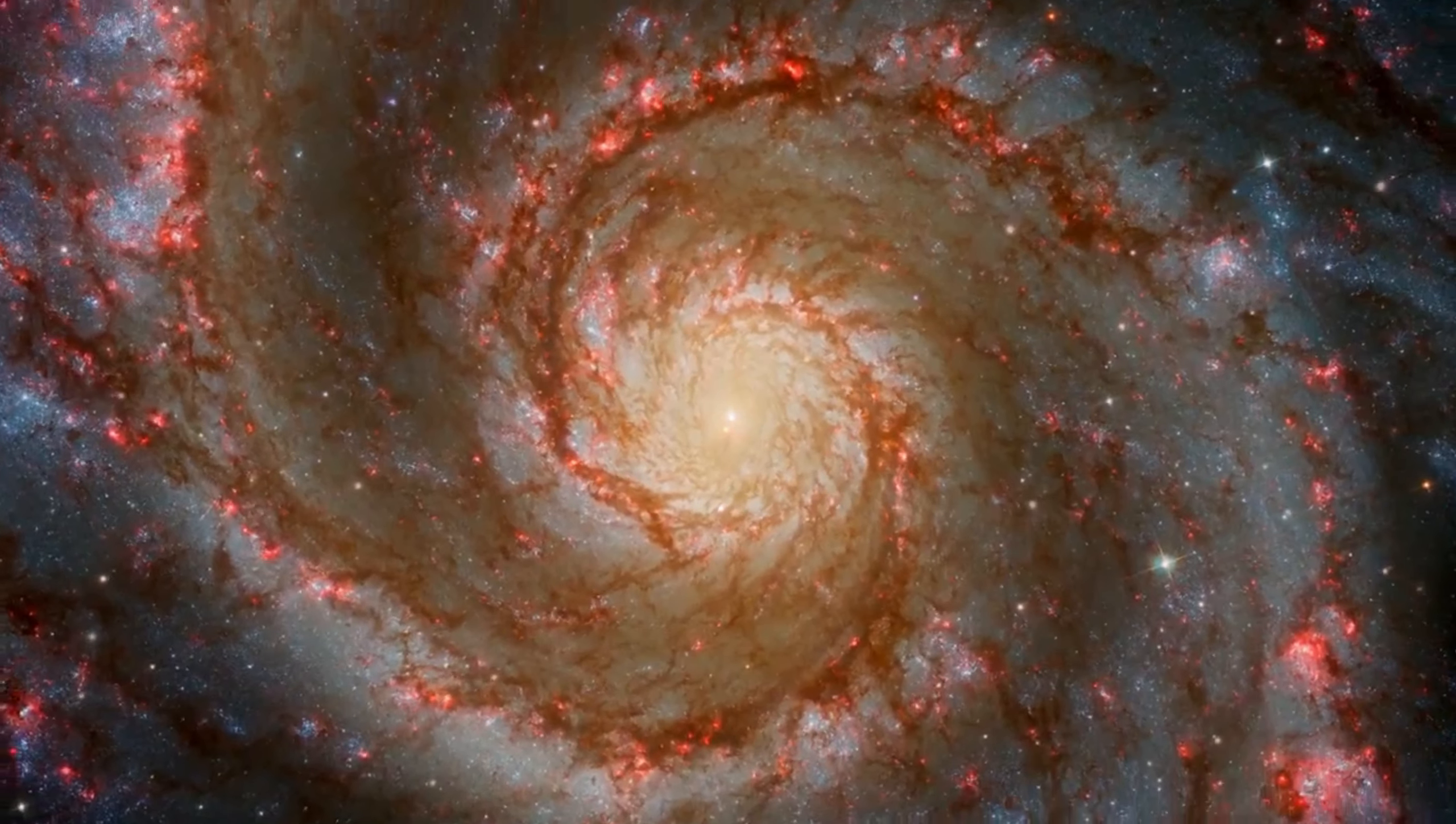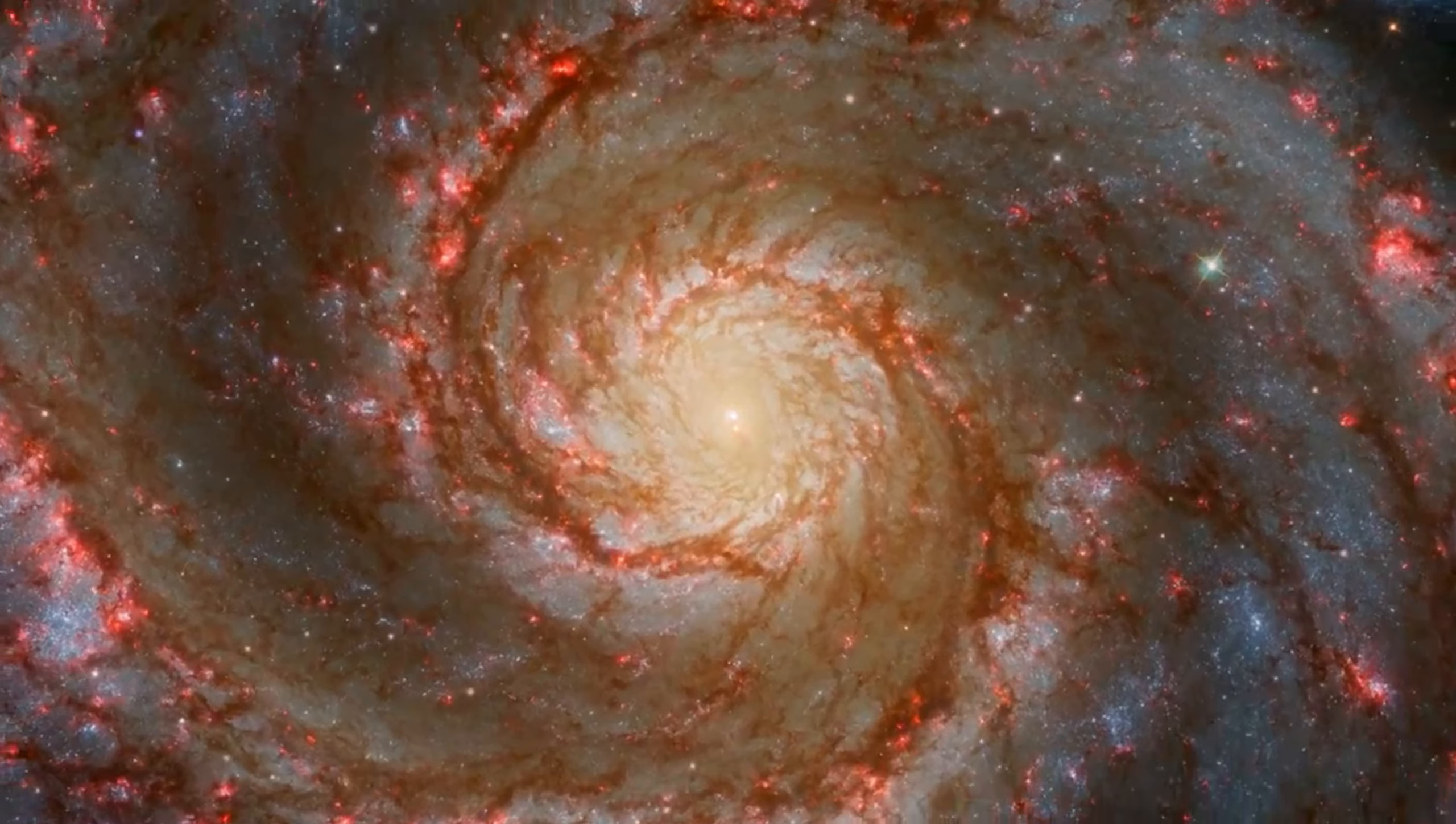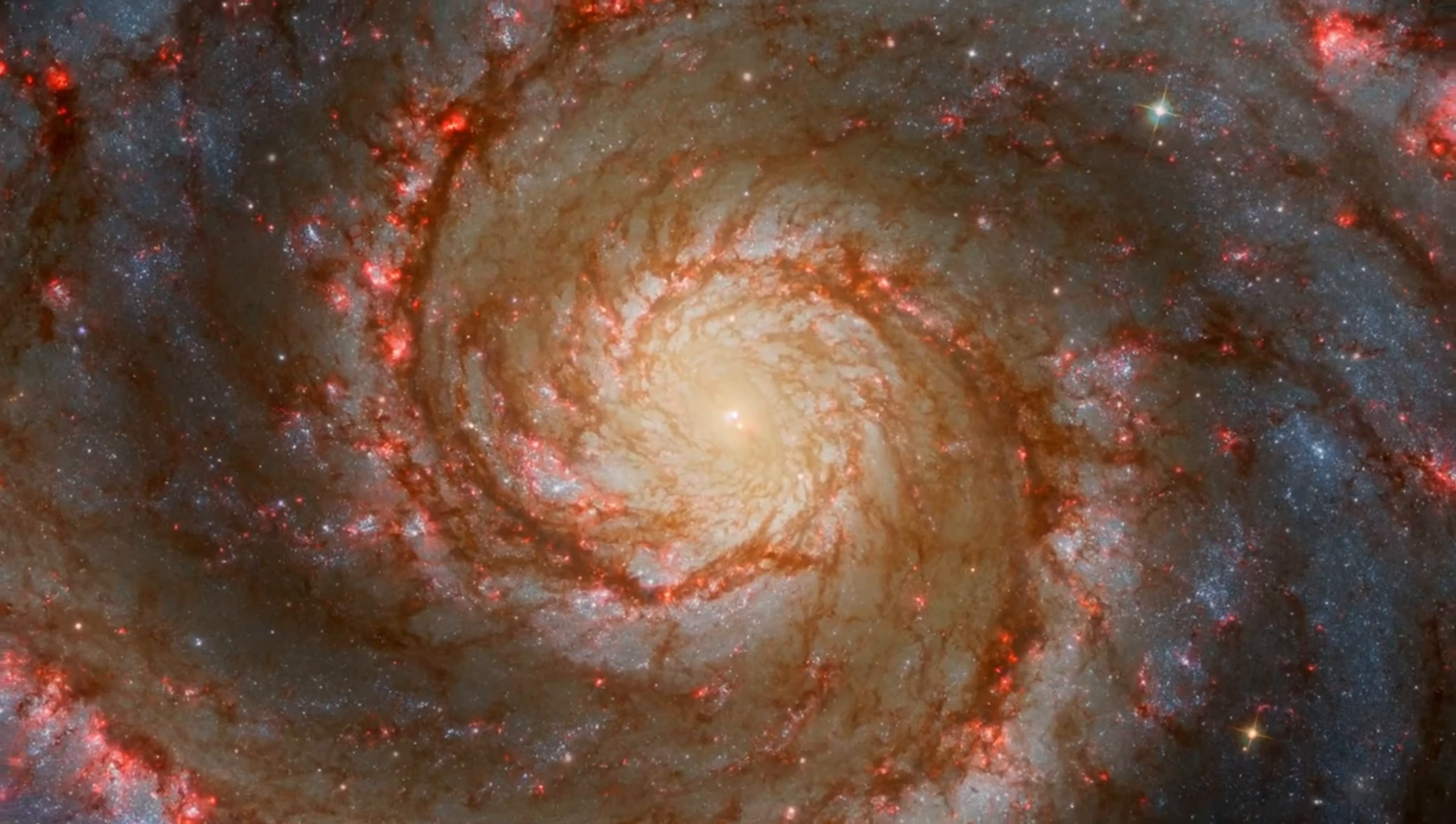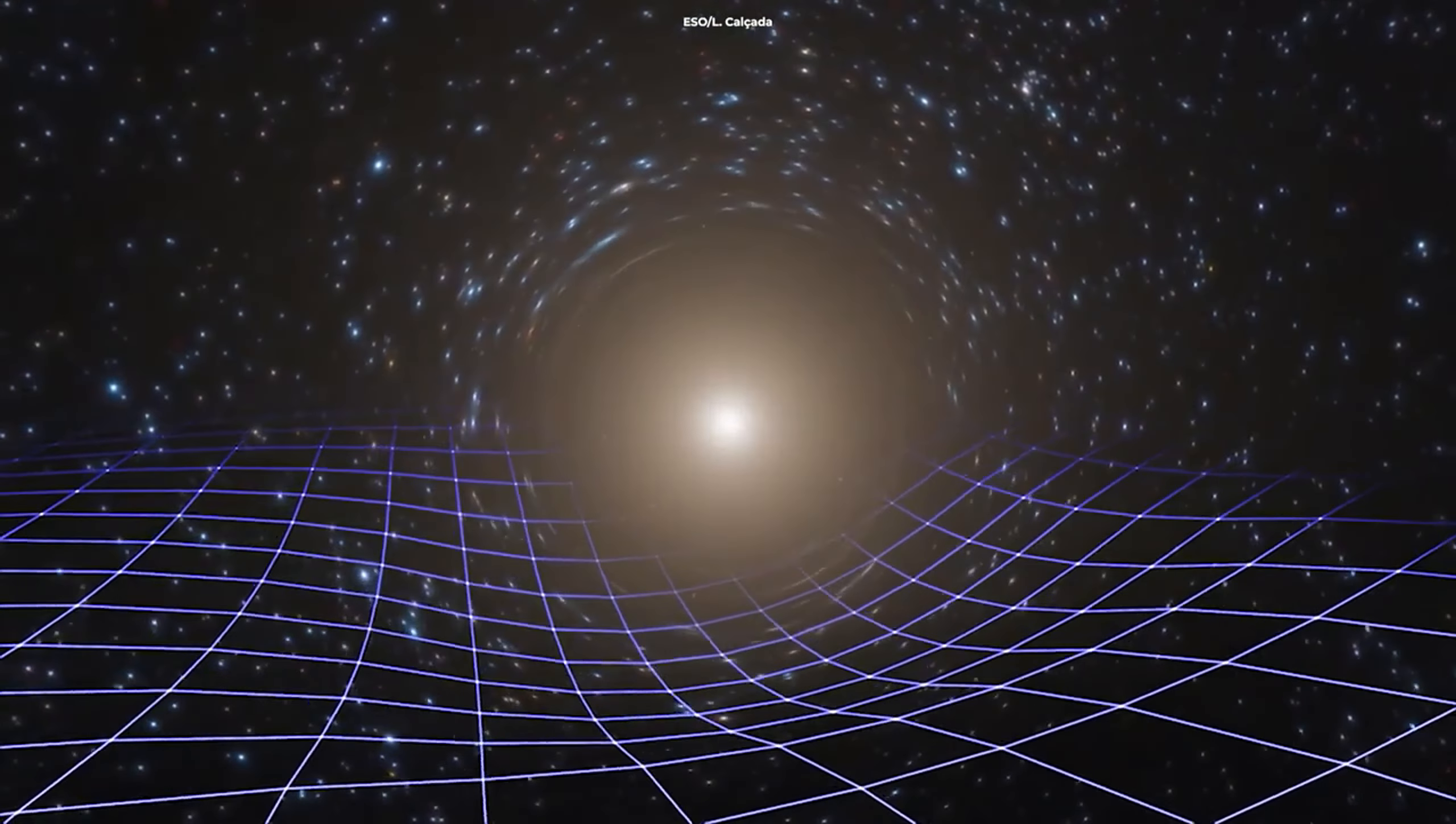In theory, stars at the edges of the galaxy should have dispersed because they have too much speed, and then we wouldn't be able to observe such beautiful spiral galaxies. Does this mean that Einstein was wrong with his theory of gravity?